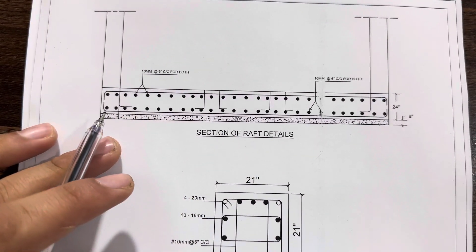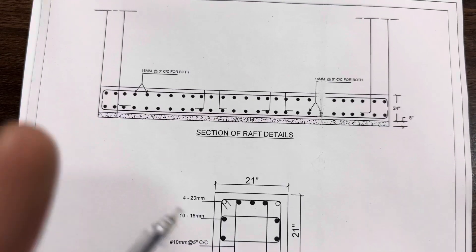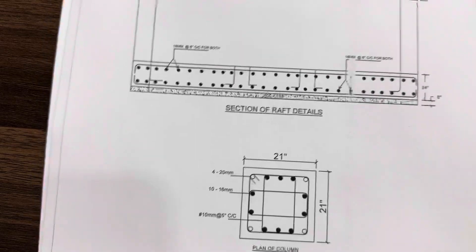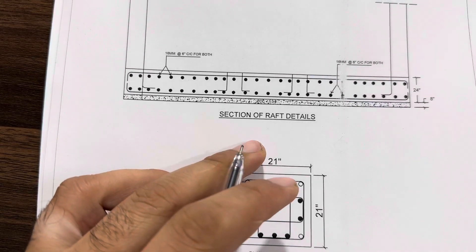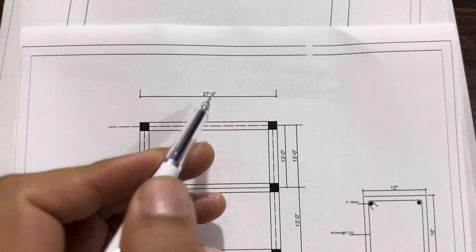Welcome back to Civil Engineers YouTube channel. Today in this short video lecture I will guide you for section of raft foundation and plan of RCC column which I have designed for a four story commercial building. The size of that commercial building is 27 feet by 67 feet.